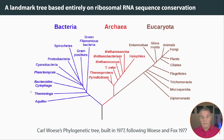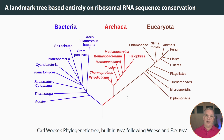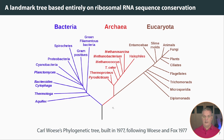I want to end this background piece with a couple of examples of a particularly important tree that represented a landmark in molecular evolution. This tree was built by Carl Woese in 1977, built entirely on ribosomal RNA — not using any morphological characteristics. Because all organisms have ribosomal RNA, you can look across perhaps the entire tree of life this way. This is a really important tree in the history of molecular evolution, and it represents something like the tree of life. It was a very controversial tree when it was first proposed.